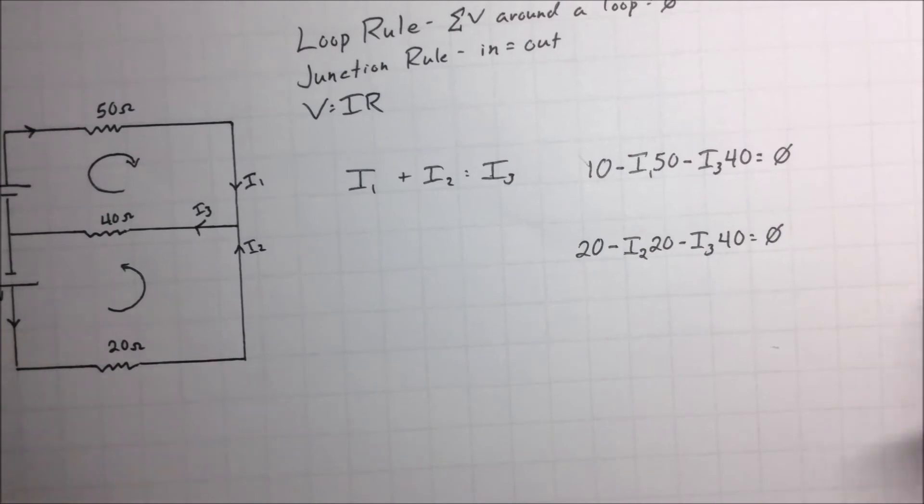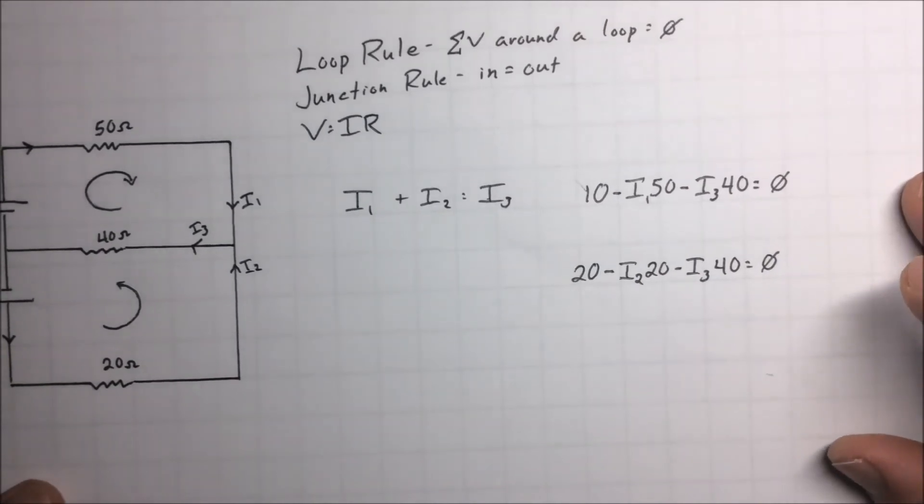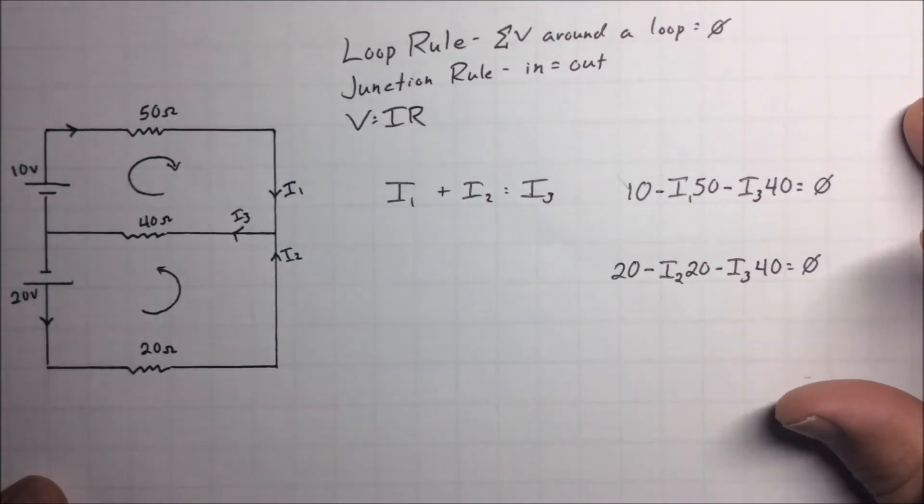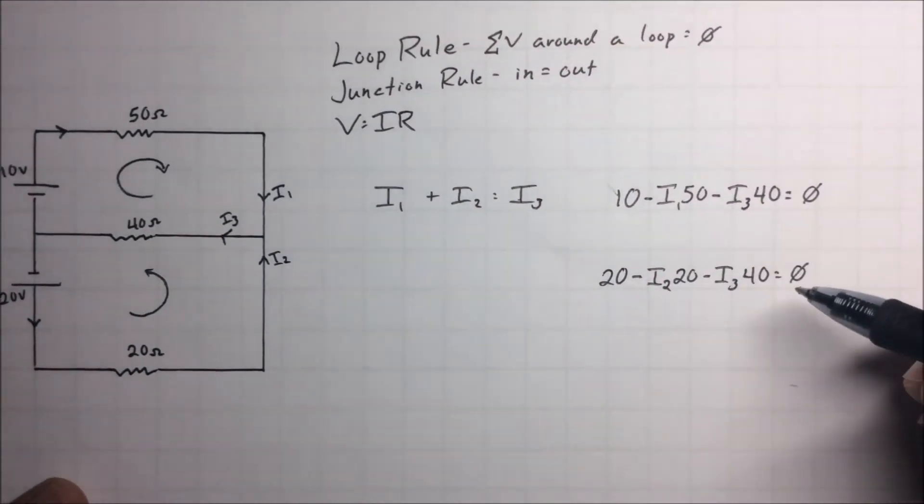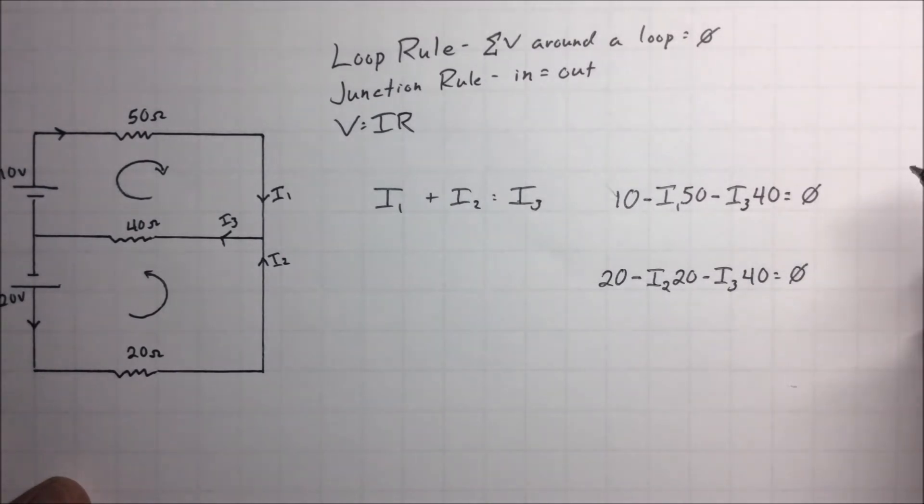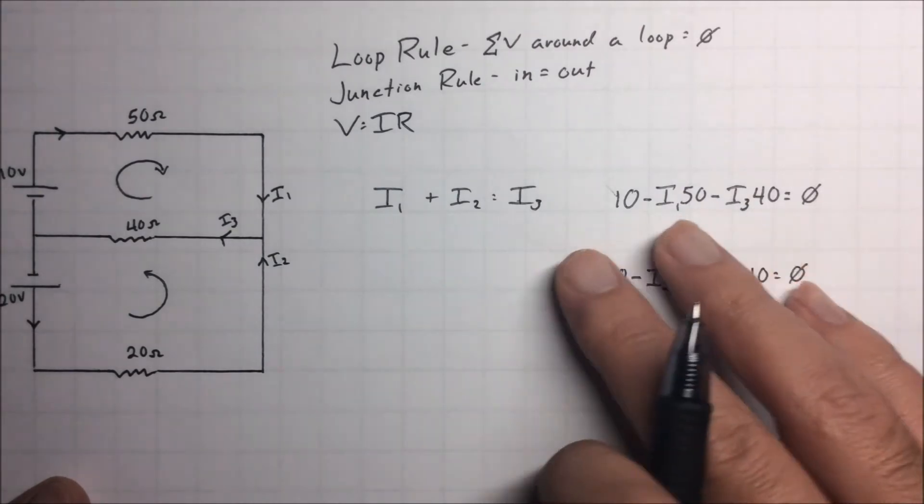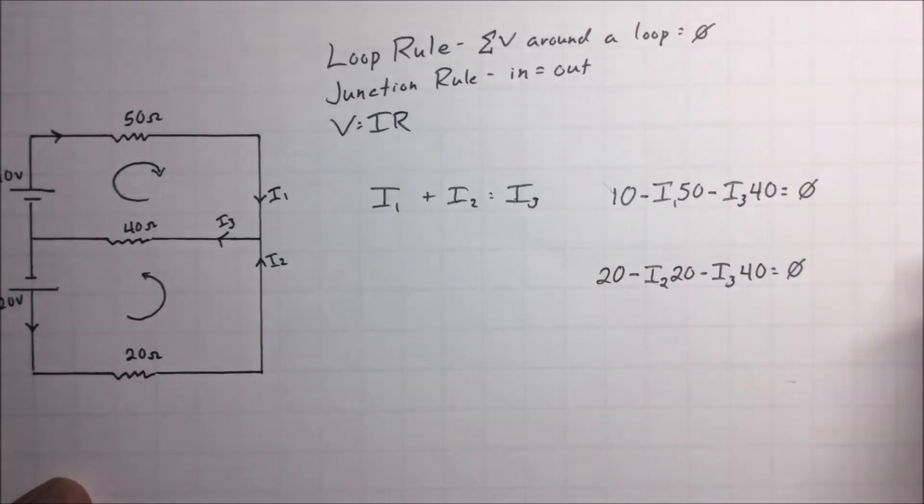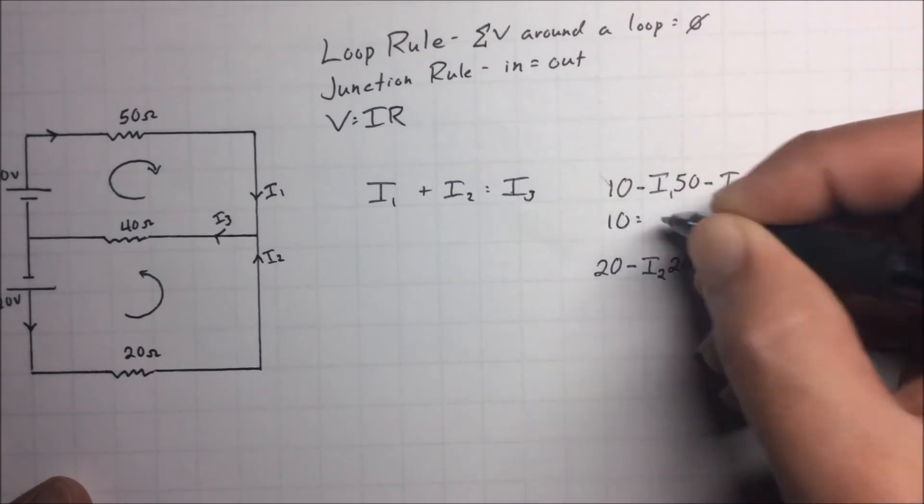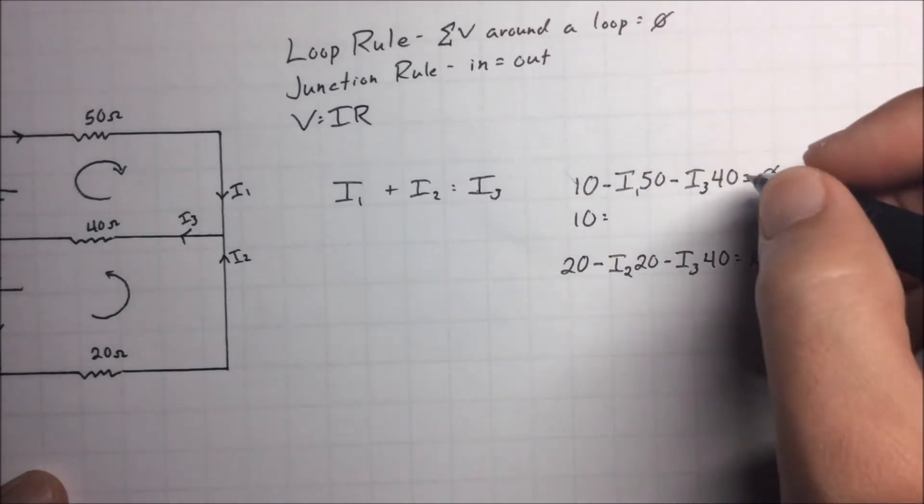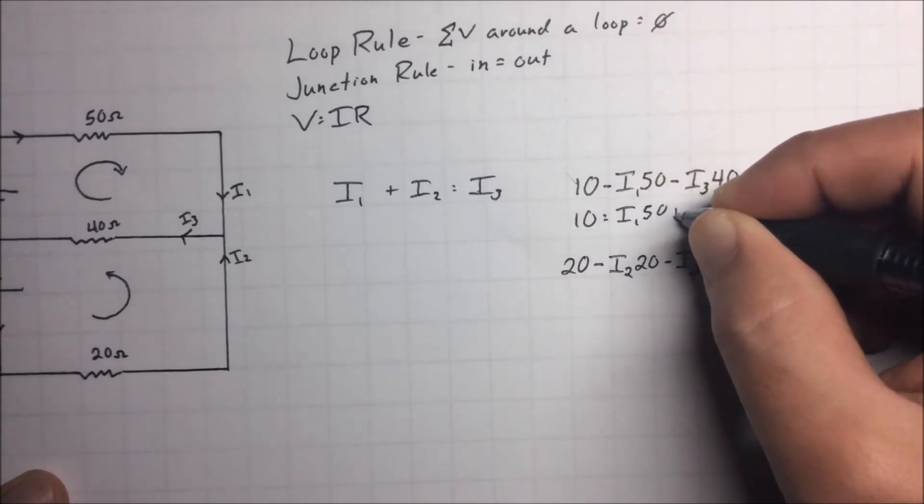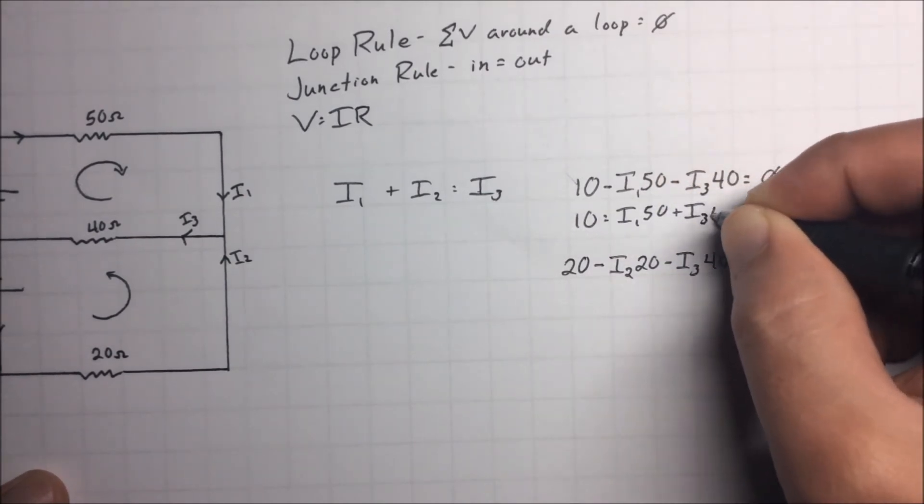So we have three unknowns and we have three equations. We could have four if we did the outer loop which I'm not going to do, but right now let's try to solve these and get to some value of current. And once you have one of them then you can start solving for the other ones. So easily we're going to start moving these around. So here we have 10 is equal to, and this is probably where I'm going to fast forward it by the way, I1 times 50 plus I3 times 40.